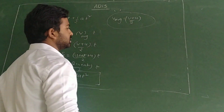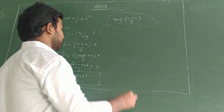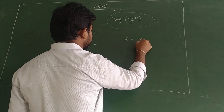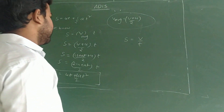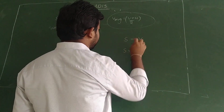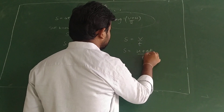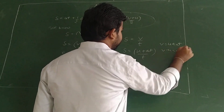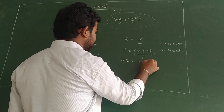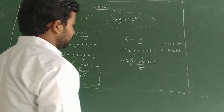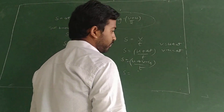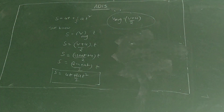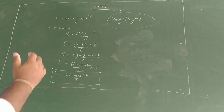How do we derive average velocity? We know distance = speed × time. We can express speed as (u + at)/2. Since v = u + at, then v - u = at. Substituting back, average velocity = (v + u)/2, which confirms our formula.